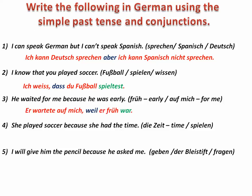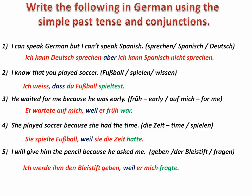He waited for me because he was early — Er wartete auf mich, weil er früh war. In the perfect: Er hatte auf mich gewartet, weil er früh war. The verb war moves to the end after the subordinating conjunction weil. She played soccer because she had the time — Sie spielte Fußball, weil sie die Zeit hatte. I will give him the pencil because he asked me — Ich werde ihm den Bleistift geben, weil er mich fragte, oder weil er mich gefragt hat. Note: there is also the coordinating conjunction denn meaning 'because,' which does not require verb movement. Vielen Dank für das Zuschauen. Auf Wiedersehen.